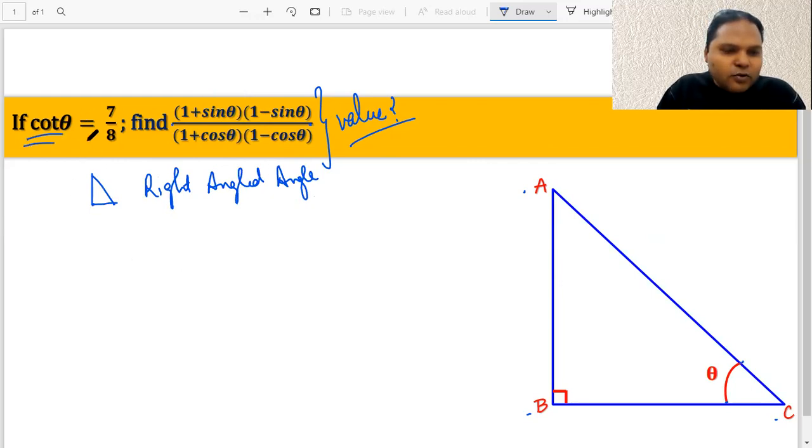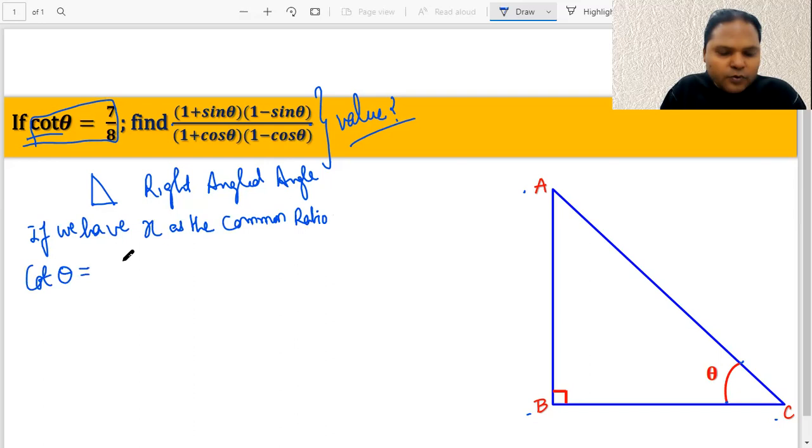Now since cot θ is equal to 7/8, if we consider x as the common ratio, what it means is that we can say cot θ is equal to 7x/8x, which means - and we also know that cot θ is equal to adjacent upon opposite.